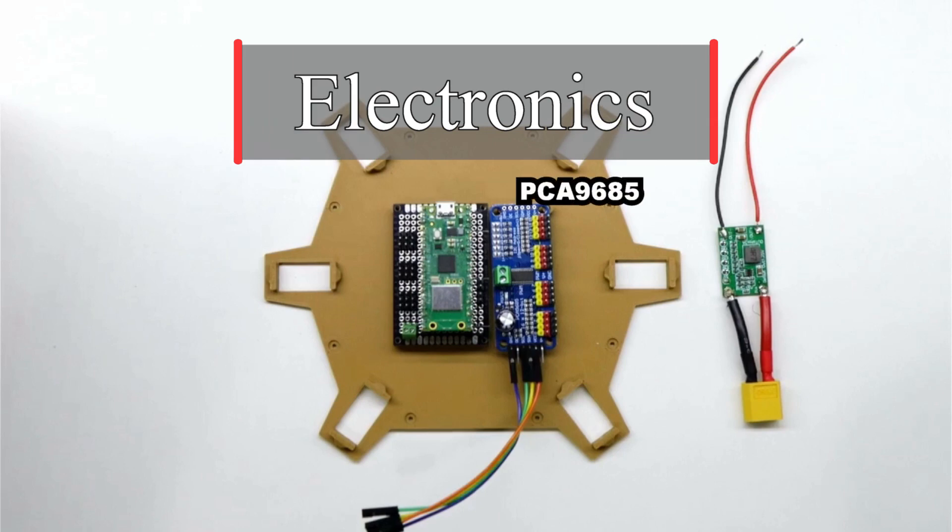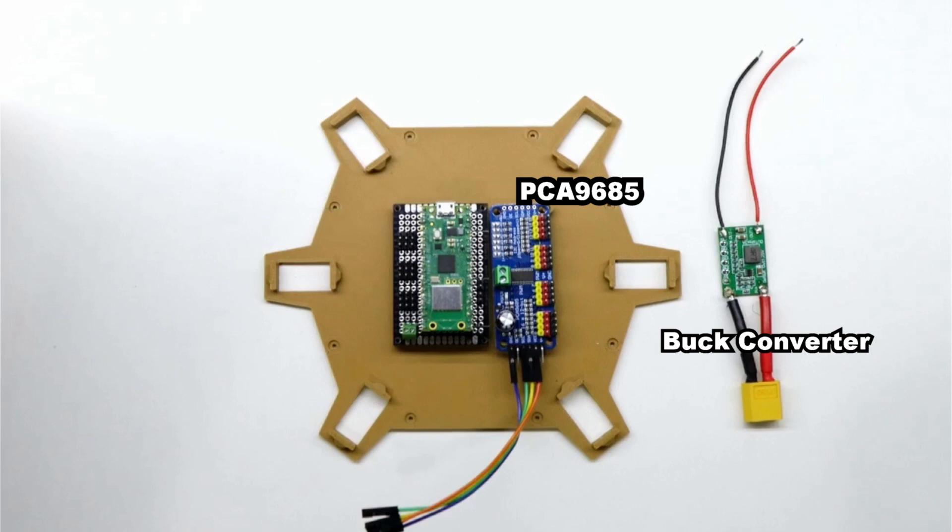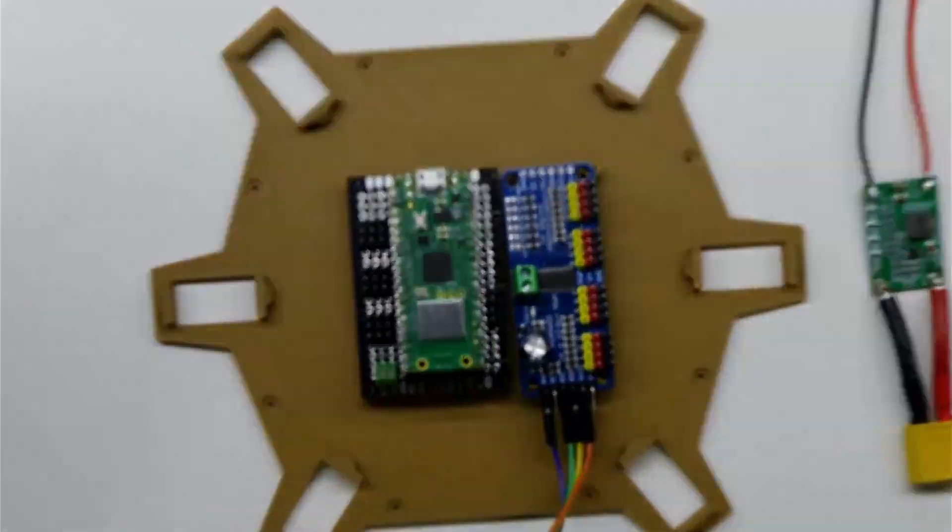The prototype will use the PCA 9685 servo controller, the buck converter that I prepared in the last episode, and a Raspberry Pi Pico W. To wire everything up to the Pico, I will be soldering together a breakout board.